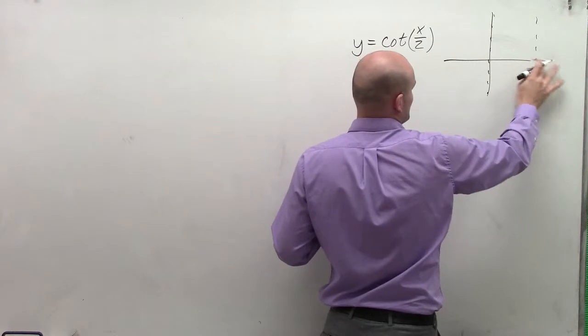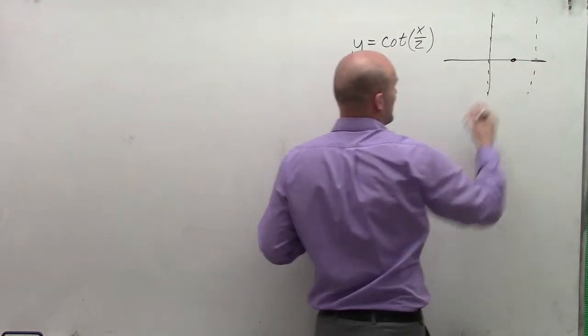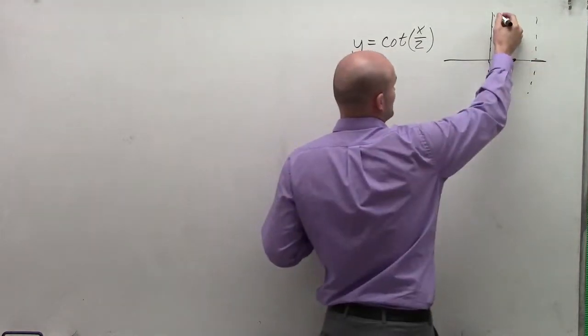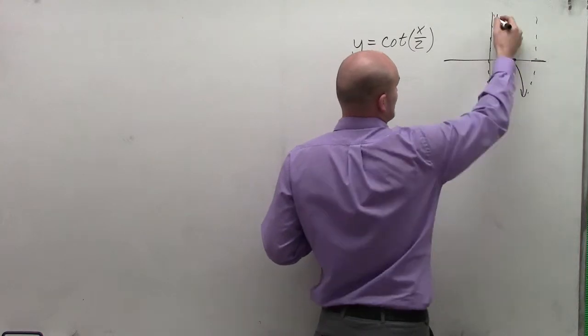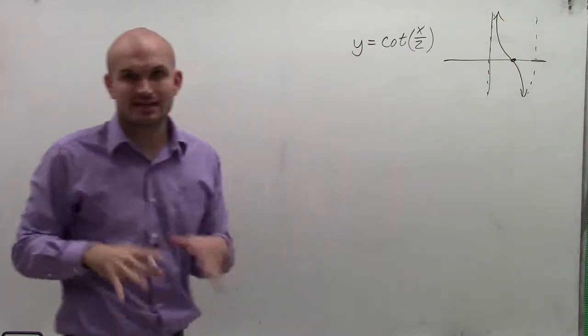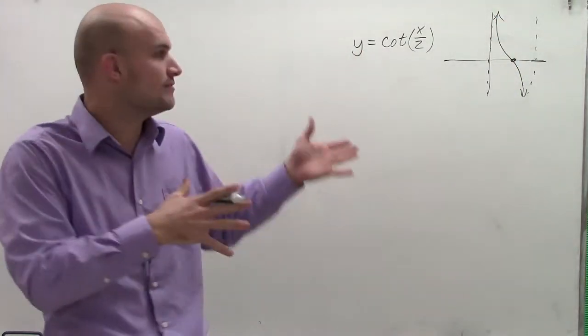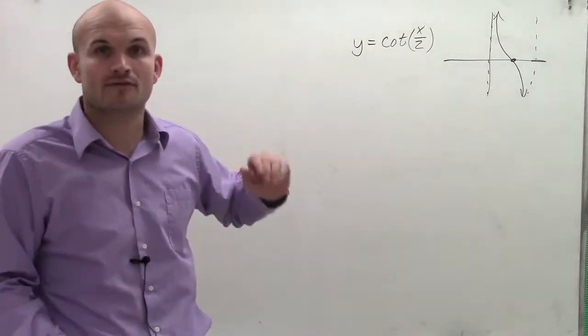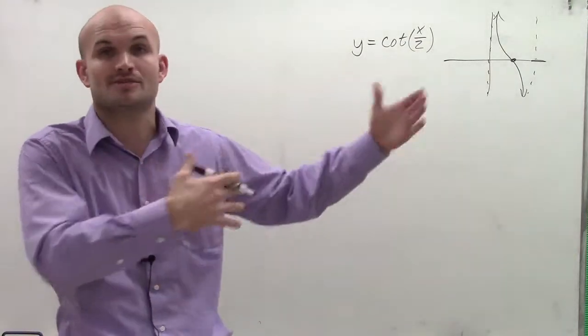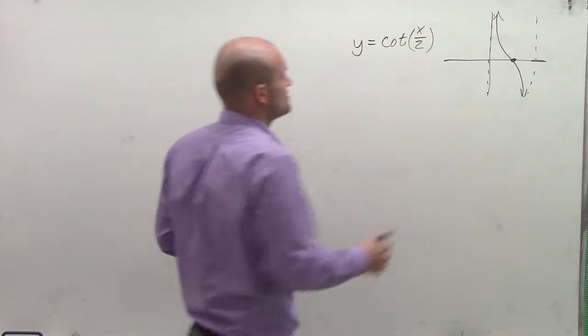It has an x-intercept at pi halves, and then the graph is going to approach both asymptotes in that format. So that's the initial form. That's what the parent graph of an initial period of cotangent looks like. Now remember, it is cyclical, so it repeats itself on and on. This point is at pi.